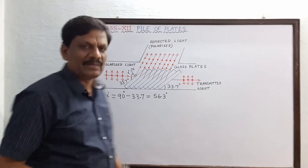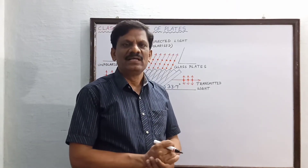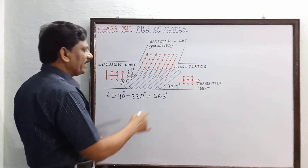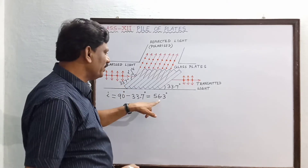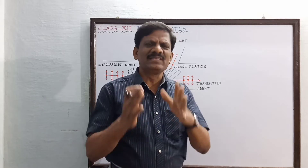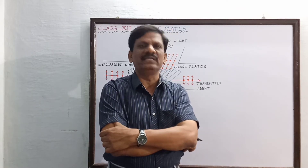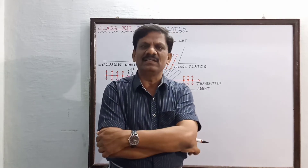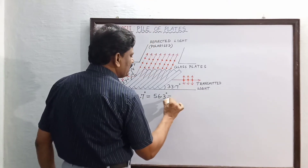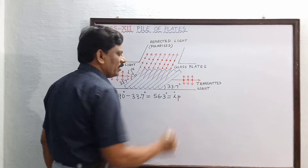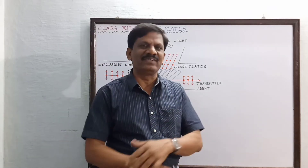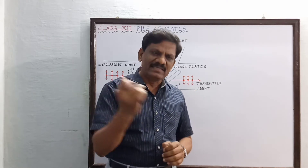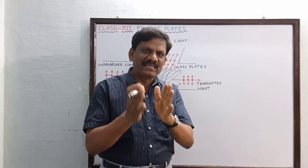There is a purpose for inclining the glass plates at this angle of 33.7 degrees — only then will the angle of incidence of the unpolarized light be equal to 56.3 degrees. What is special about this angle? Because 56.3 degrees is the polarizing angle for glass. So this angle of incidence is found to be equal to the polarizing angle for the glass surface.